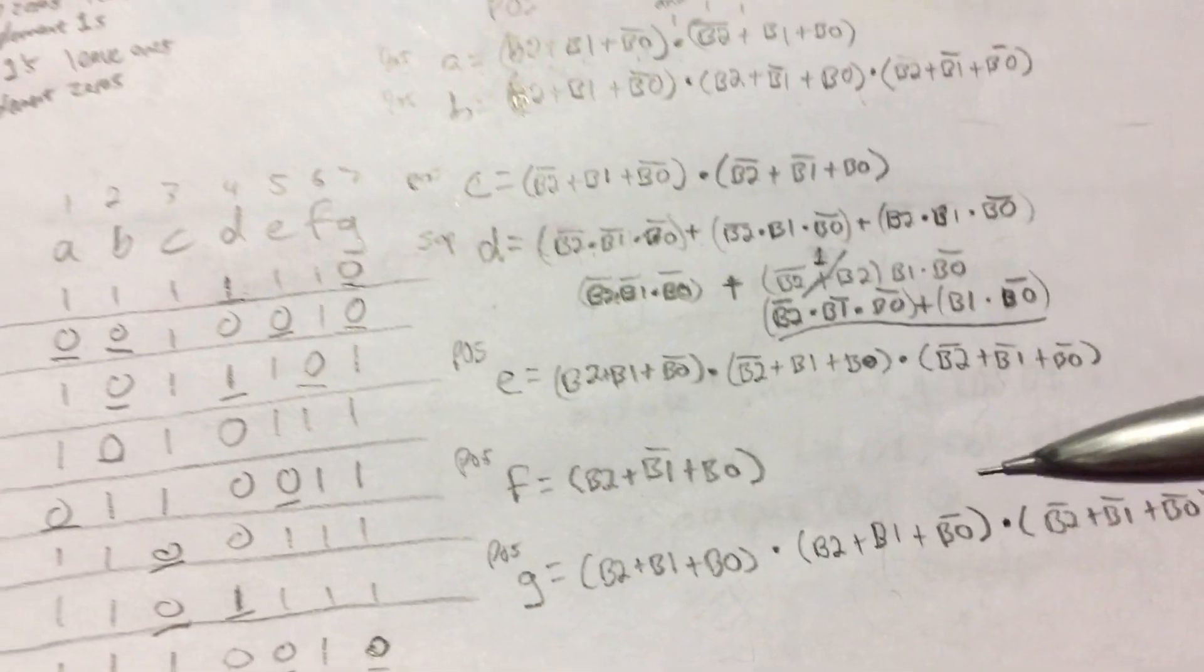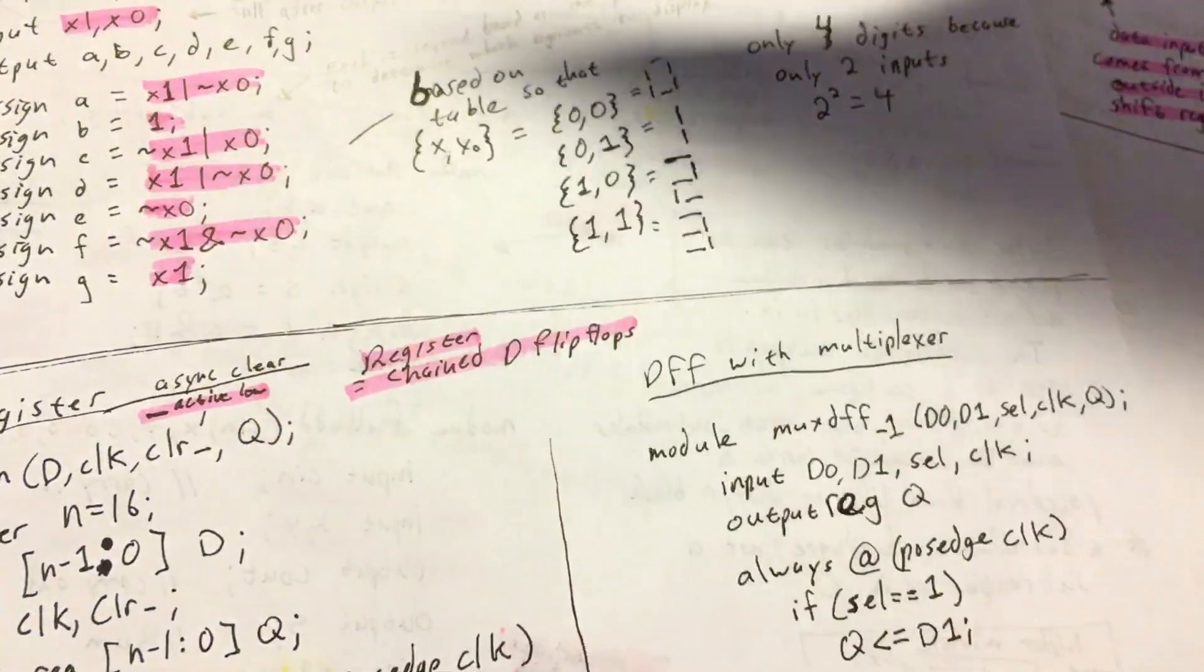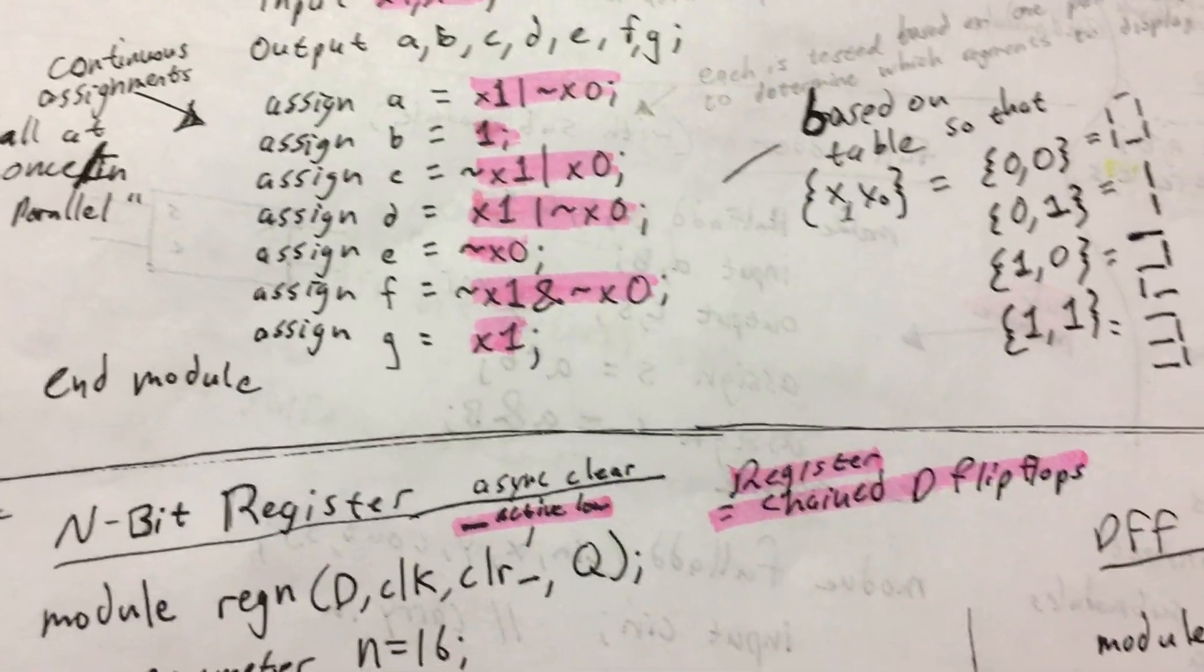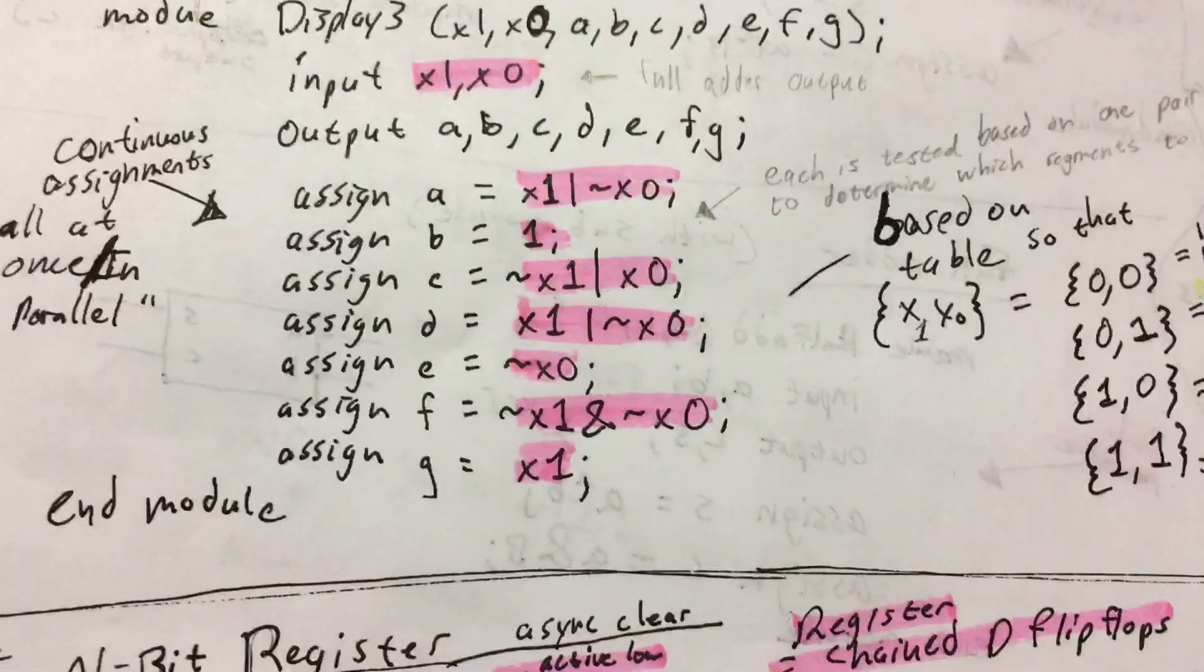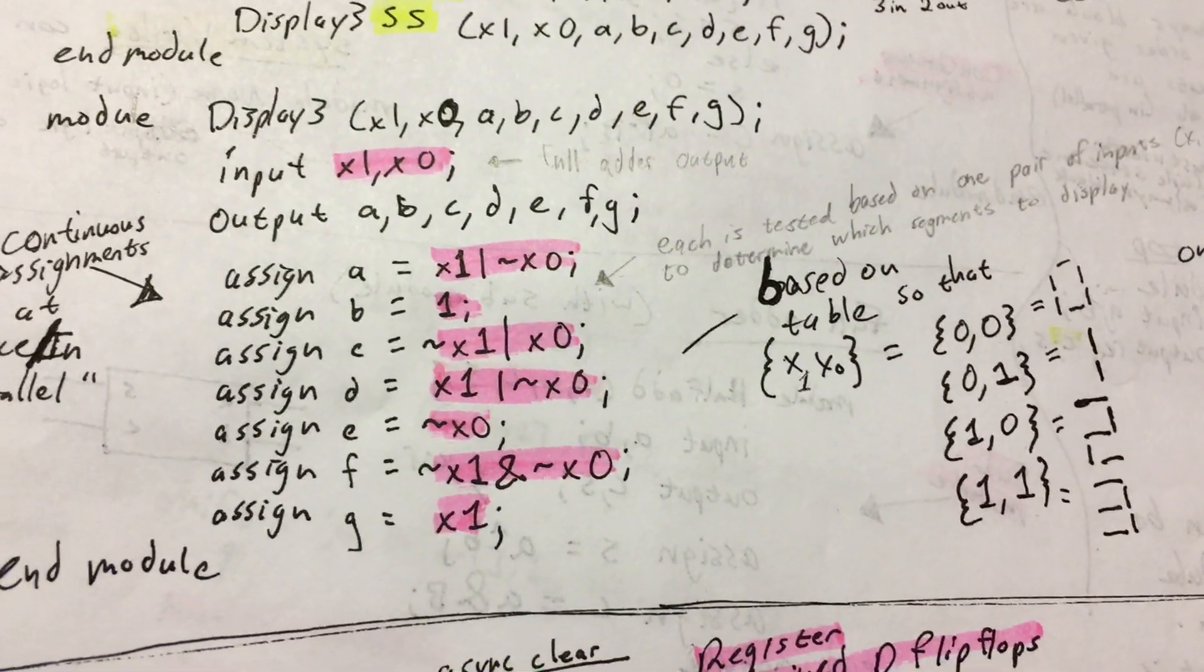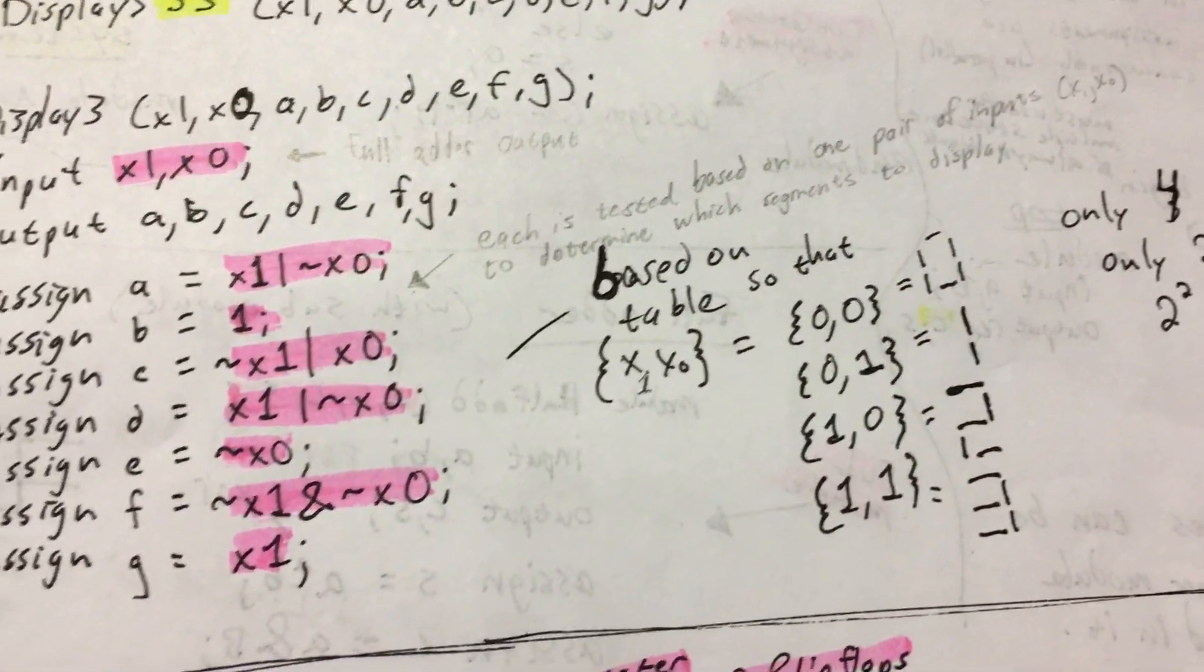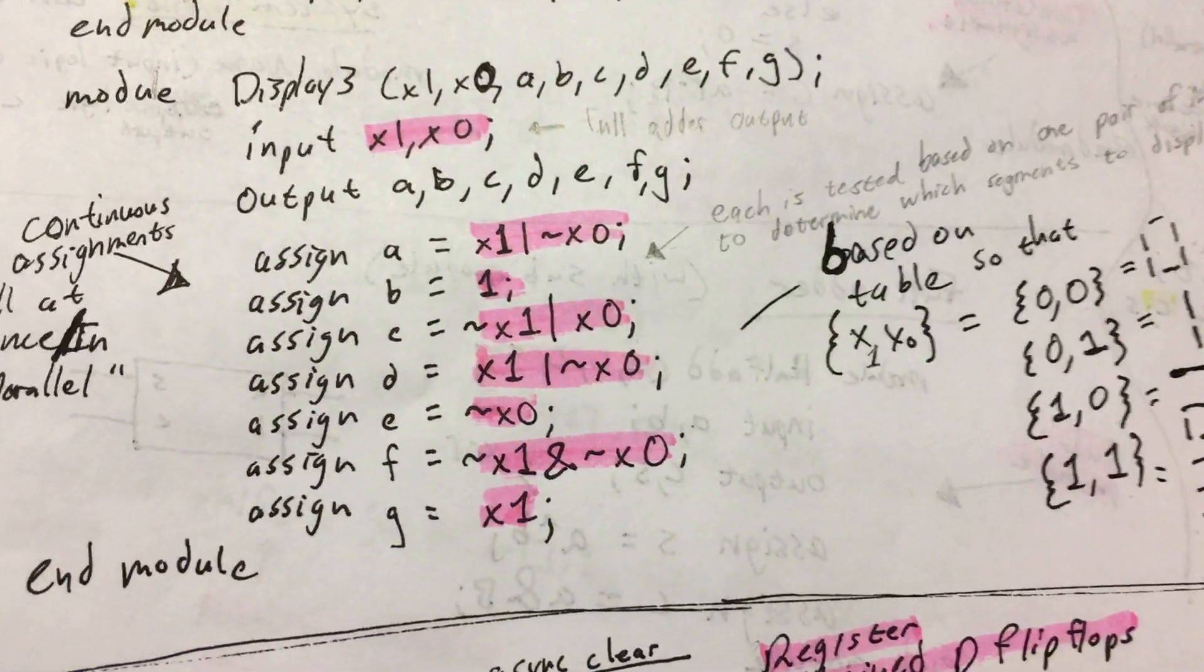So once you have this logic all worked out, we're going to need to convert that into Verilog code. This is a relatively simple Verilog program. You really only need one module. I'm not going to show you my actual Verilog code because there's lots of specifics according to which development board you're using, which FPGA you're using.